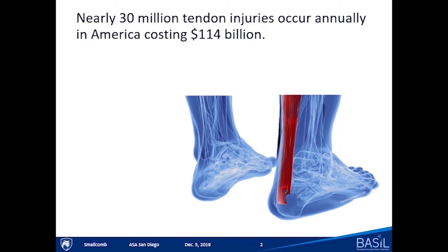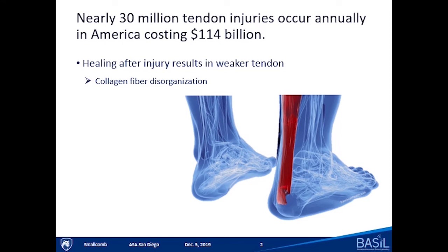Tendons are tough flexible cords of collagen fibers that connect muscle to bone. Though highly elastic, they have high strength because they are used every day. These fibers can still tear from routine activities including overuse, excessive loading, or aging. Nearly 30 million tendon injuries occur each year in America, costing around $114 billion to treat. Even when a tendon heals, it usually results in an overall weaker tendon, often requiring help in re-healing due to collagen fiber disorganization — fibers are no longer in their parallel, longitudinal orientation. Scar tissue or calcifications can form in the area, and low vascularization means limited blood flow and fewer healing factors reaching the area.